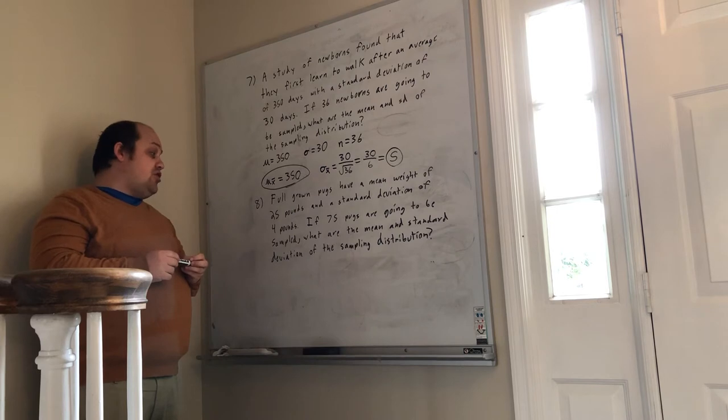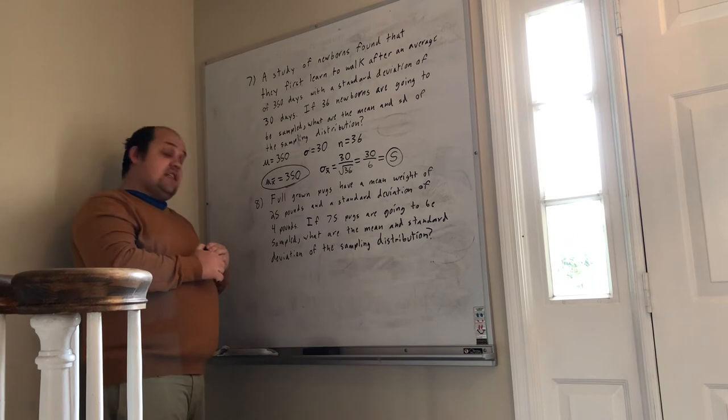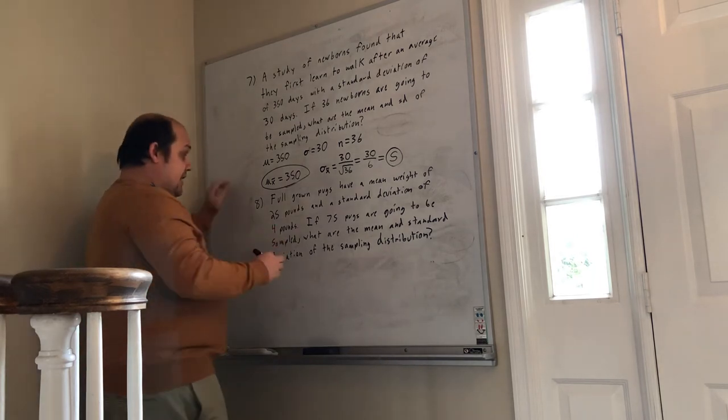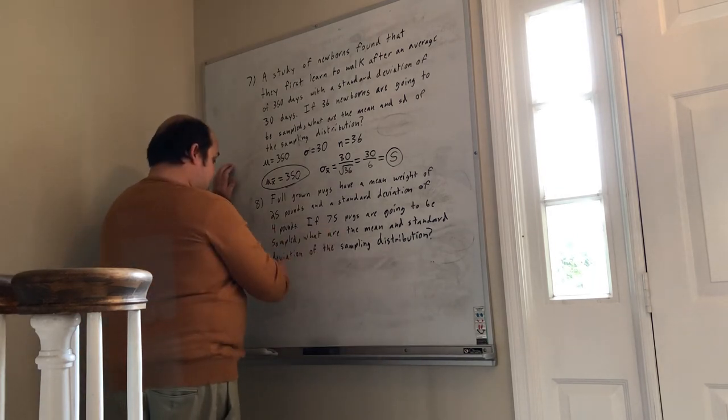If 75 pugs are going to be sampled, what are the mean and standard deviation of the sampling distribution? Again, I start out pulling out the information that I see. Mean weight of 25 pounds means mu equals 25.